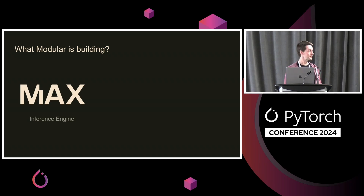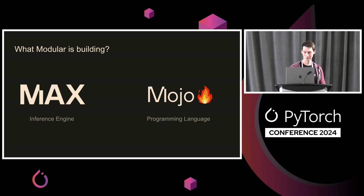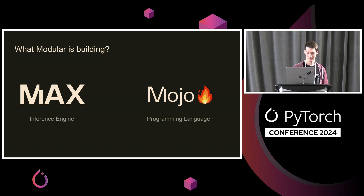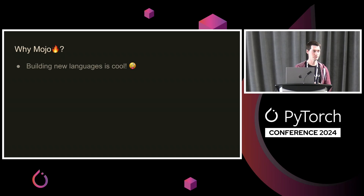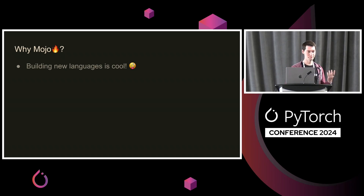In the process of doing that, we also built a new programming language called Mojo, which you have probably heard about already. Let me first address the elephant in the room and explain why we did this — why we built a new language. Well, first of all, building new languages is always cool. And whenever you face a new problem, the first question you should ask is whether a new language would solve it better — and if the answer is yes or maybe, then you should definitely build it.